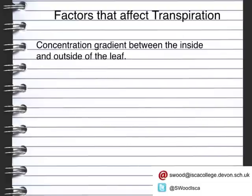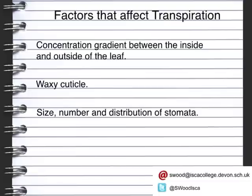To summarise, the concentration gradient between the inside and outside of the leaf affects the rate of transpiration. However, leaves have adapted to reduce this by having a waxy cuticle layer on top to reduce evaporation. The size, number and distribution of the stomata also help to reduce or increase the amount of transpiration that occurs.